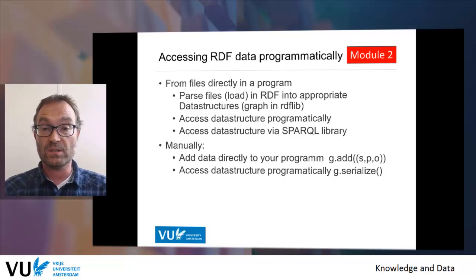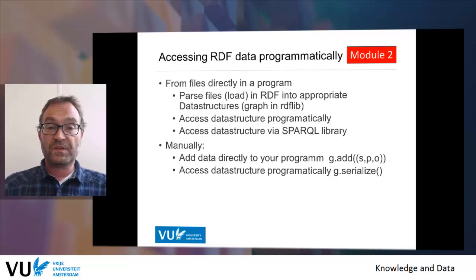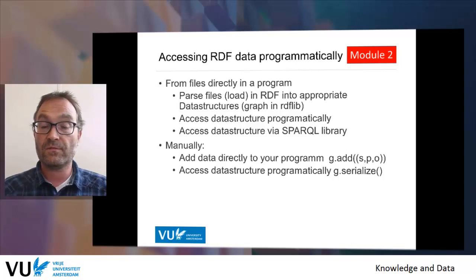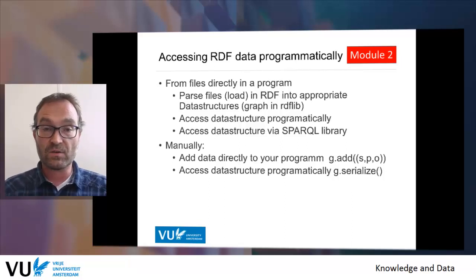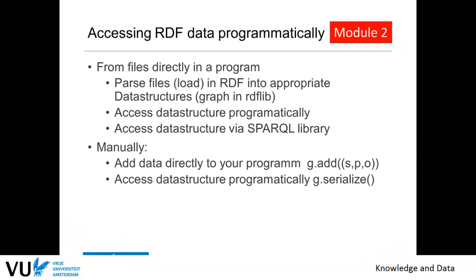This is the structured way — you can use either operators from your library to manipulate the graph structure, or use SPARQL to get information out of your data structure. You can also do manual work: you can add data to your program using, for example, the g.add function, which just adds a triple, and then access the data structure programmatically, serializing it and printing things out. This is really the sort of hands-on work with data that has been parsed into a data structure of your programming library.